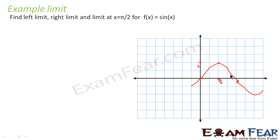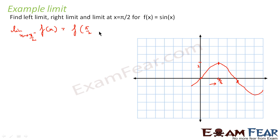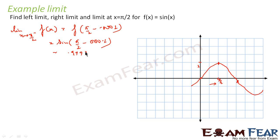Now we have to find the limit at x equal to π/2. Approaching from the left-hand side: the limit as x tends to π/2 minus of f(x) is nothing but f(π/2 − 0.001). That value is sin(π/2 − 0.001), which is almost equal to 1 — approximately 0.9999.